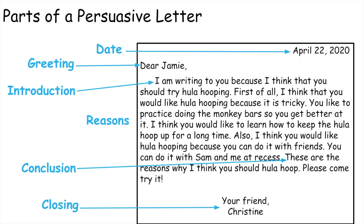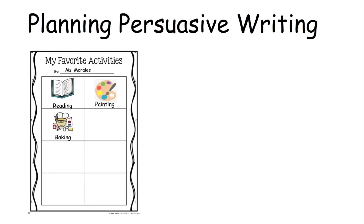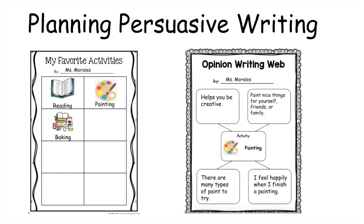So these are the things that we need to have when we write a letter, and this is what you are going to be doing today. During the past lessons, you brainstormed about your favorite activities. Last week, you chose an activity to write about. Then you created a web of all the reasons to support why you like your favorite activity and why your friends should try it. I listed all of my favorite activities — reading, painting, and baking.